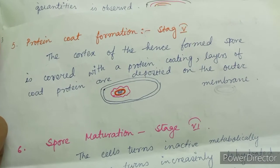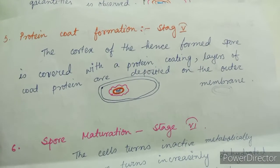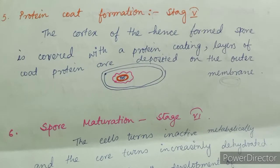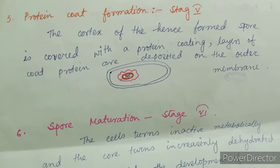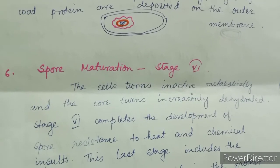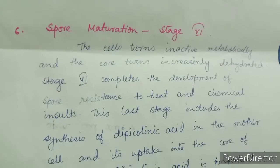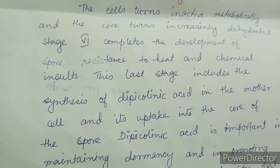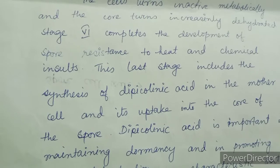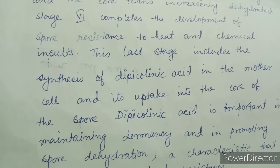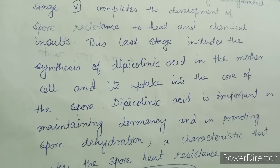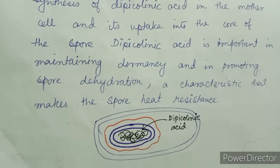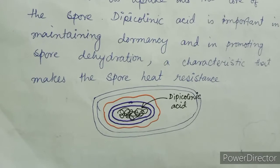The fifth stage is protein coat formation, Stage 5. The cortex of the formed spore is covered with a protein coating layer, and layers of coat protein are deposited at the outer membrane. Stage 6 is spore maturation — the cells turn metabolically inactive and the core becomes increasingly dehydrated. Stage 6 completes the development of spore resistance to heat and chemical insults. This stage includes the synthesis of dipicolinic acid in the mother cell and its uptake into the core of the spore, which is important in maintaining dormancy and promoting spore dehydration.